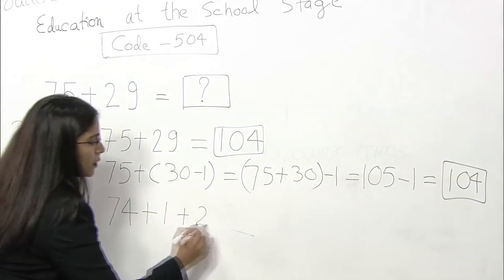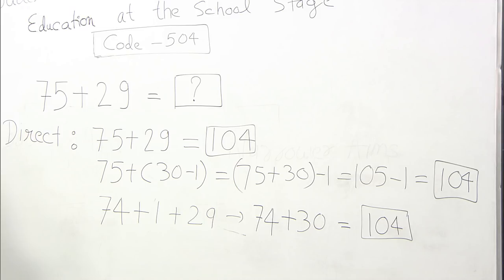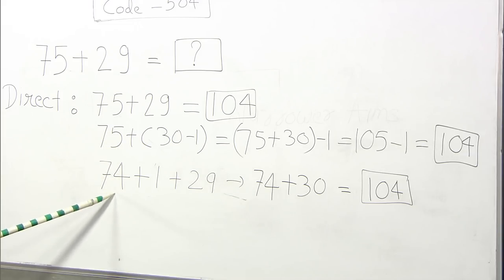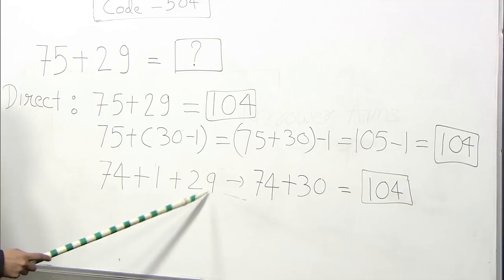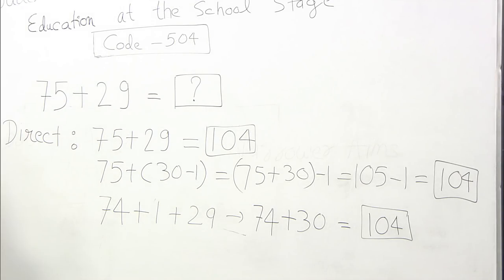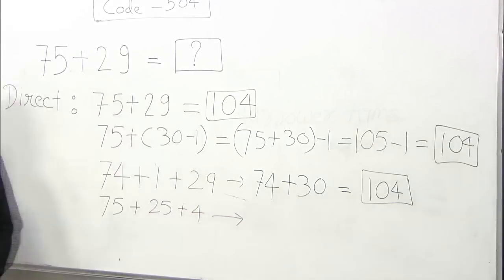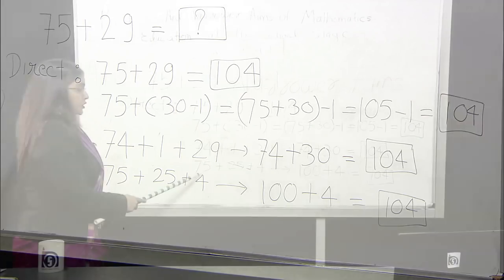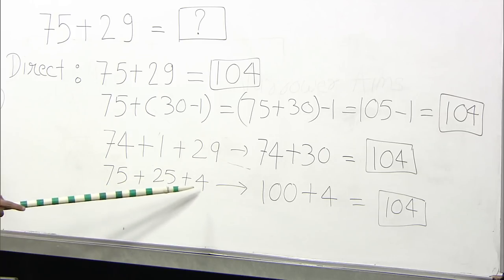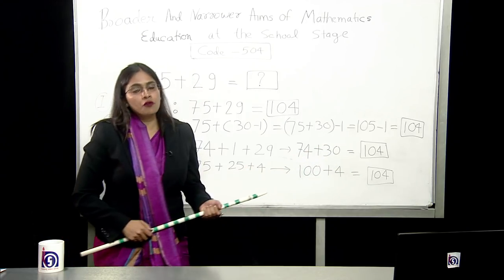Third method. In the next method, 75 is converted into 74 plus 1 plus 29. Here, I add 1 plus 29 as 30 and plus 74. So, the result is 104. And the last method which I have mentioned here is 75 plus 29 in 25 plus 4 forms. That makes 75 plus 25 makes 100 plus 4 and the result is 104. So, in this way, you have seen we have applied number of methods to solve a problem.